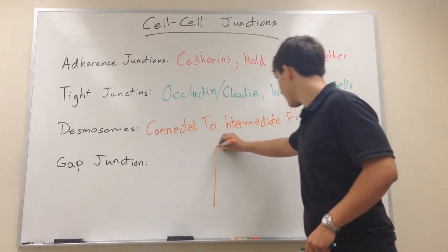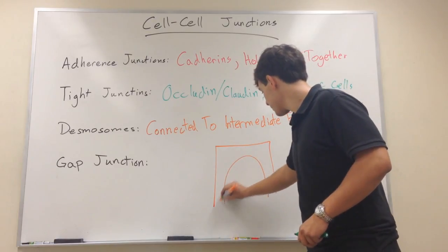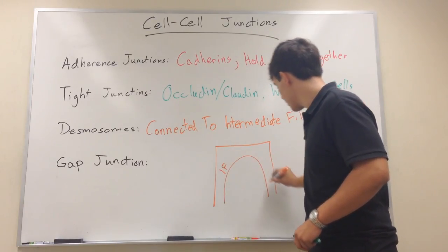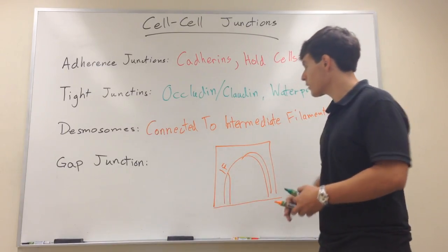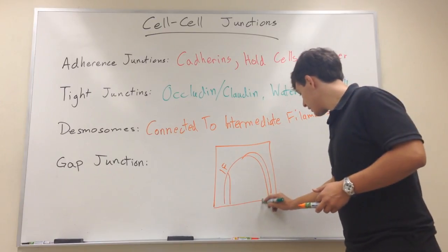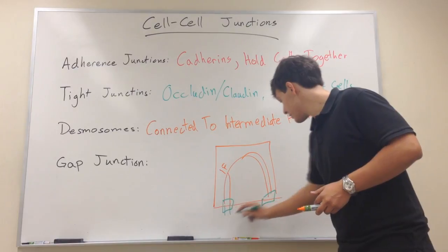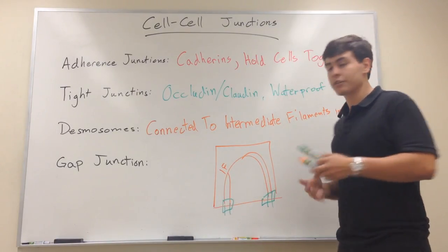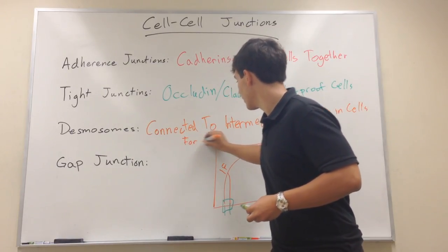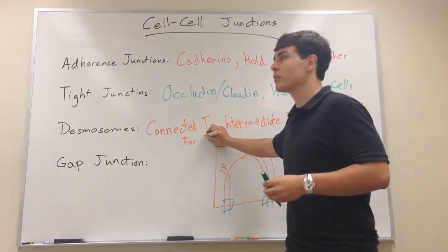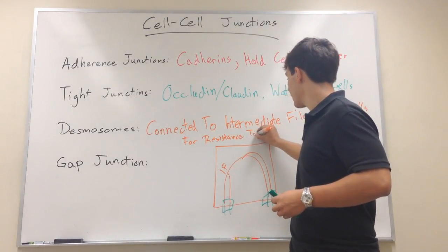And so when we have a cell down here, I'm just going to draw them like this. We have intermediate filaments which go all around the cell and do different things. And desmosomes can essentially connect with this and stabilize the entire cell that undergoes mechanical stress.